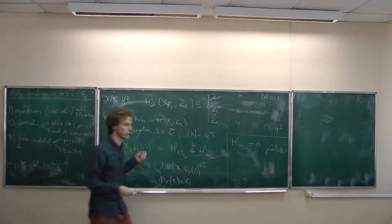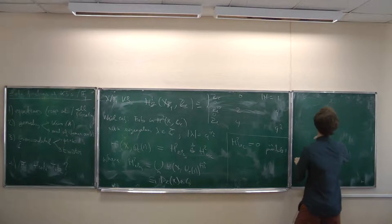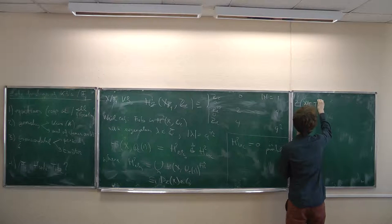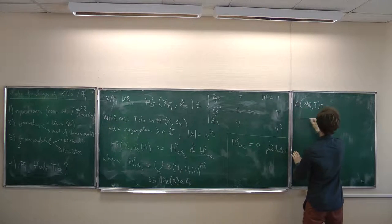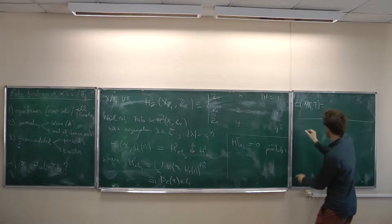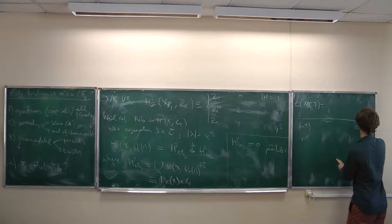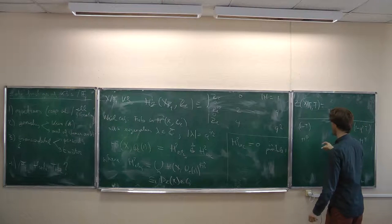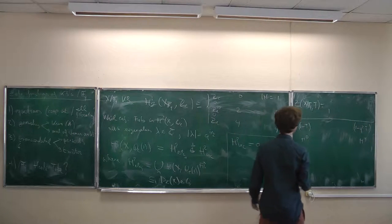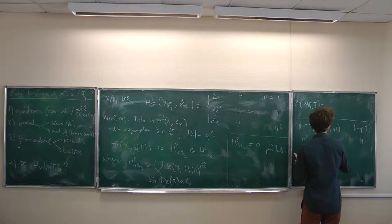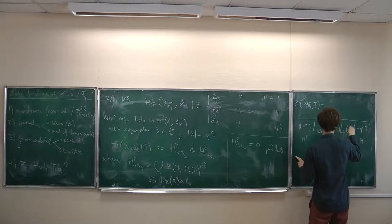Of course, if you know the structure of the étale cohomology, then you know the shape of the zeta function of X. The zeta function of X over Fq looks like: there are only things in even degree, so there is a (1 − T) coming from H⁰, a (1 − q²T) coming from H⁴, and then from H² we get two parts: L_alg(X, qT) times L_trans, where I'll drop the X.